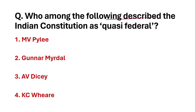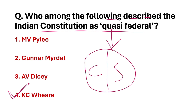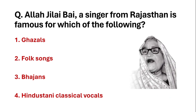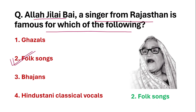Then, who among the following described the Indian constitution as quasi-federal? Allah Jilai Bai, a singer from Rajasthan, is famous for her Rajasthani folk songs. This is Rajasthan's famous singer.